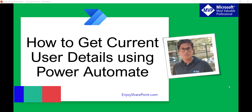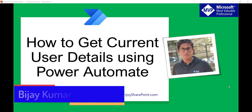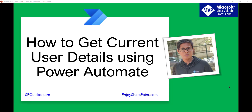Hello and welcome to the channel. My name is Vijay and I'm a Microsoft MVP in SharePoint. In today's video we are going to discuss how we can get current user details using Power Automate — details like email address, display name, department, and country. The current user means the logged-in user, whoever is running that flow.